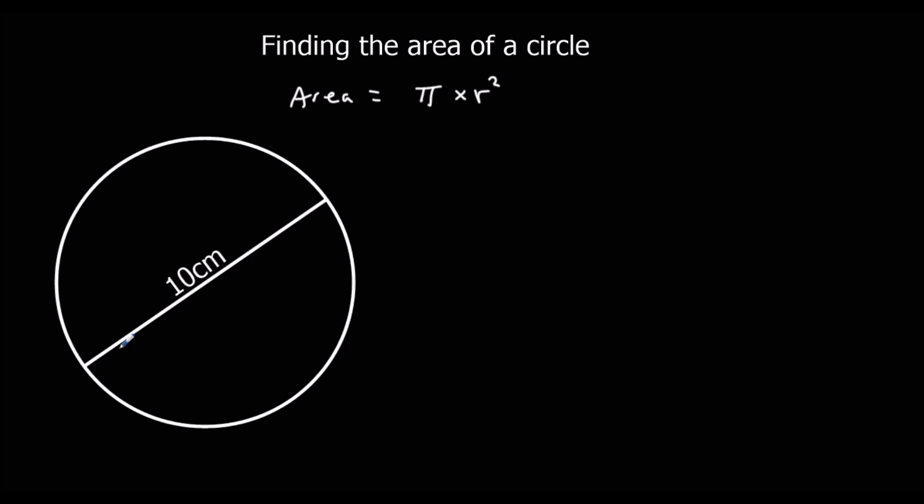If we look at this example, we've got the diameter here, it's the whole way across. So we don't want that for this formula, we need the radius. The radius is half of the diameter, so it must be 5 centimeters.